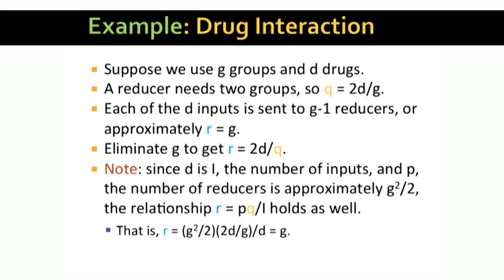There might be some confusion with the relationship R equals pq over I that we learned in the previous slide. Superficially, it looks like R grows in proportion to Q, not inversely. But p is also a variable here, and p is inversely proportional to the square of Q. We can see that the earlier equation for R holds as well, if we substitute for pq and I. p is g squared over 2, Q is 2d over g, and I is d. When you multiply these out, you get R equals g, which we knew from the analysis of what the mappers do.